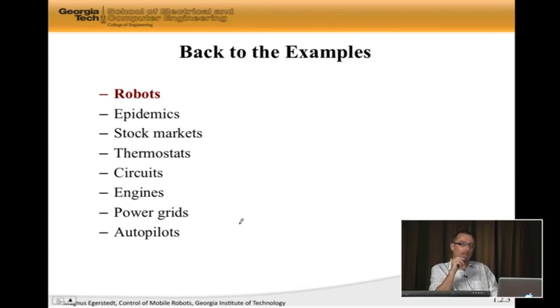The state of a robot is typically, if it's a mobile robot on the ground, the position, maybe the orientation of the robot, maybe the velocity of the robot. The state is ultimately what we need to describe what it's doing. If it's a manipulator robot, it would be the angles, the joint angles of the various segments of the robot. So that would be the state.